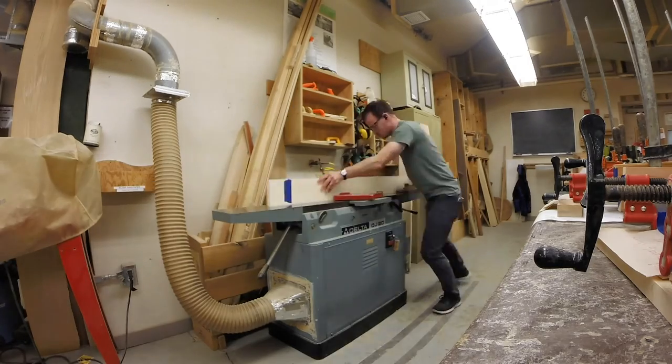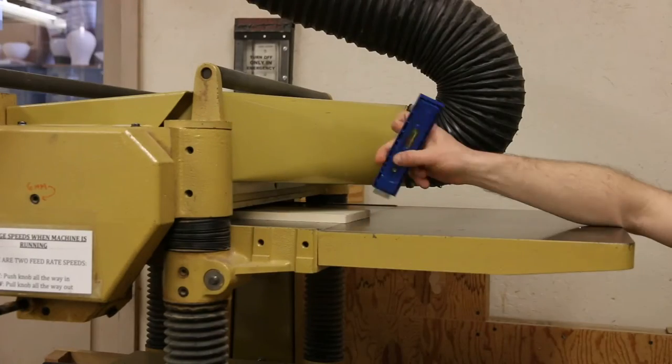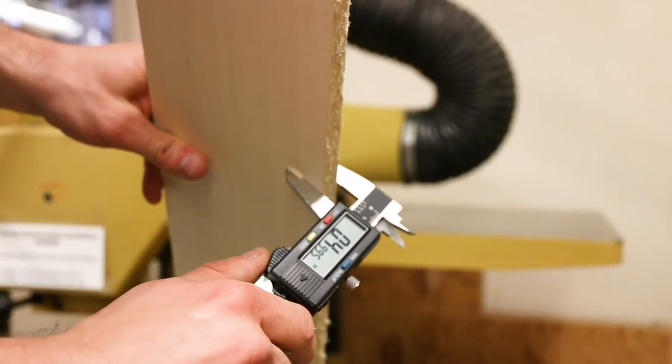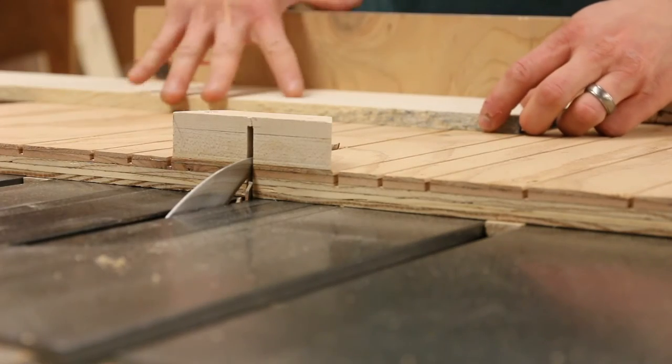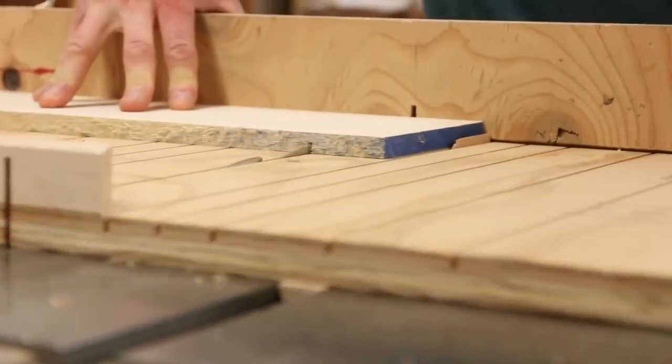First, you'll need to mill your lumber to final dimension. I normally take it down to about a half an inch thick and chop my pieces to no longer than 36 inches so I can control them on the table saw.